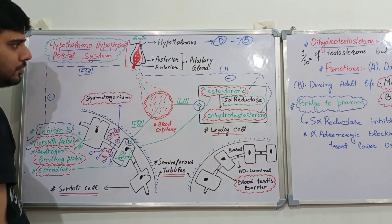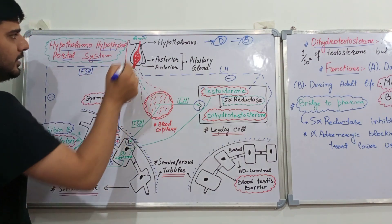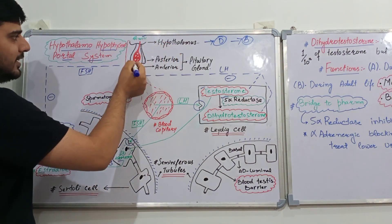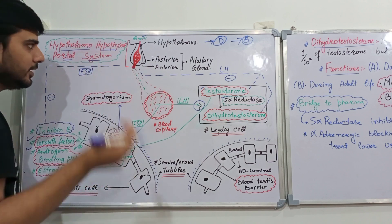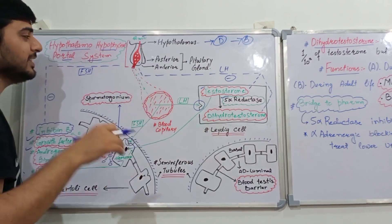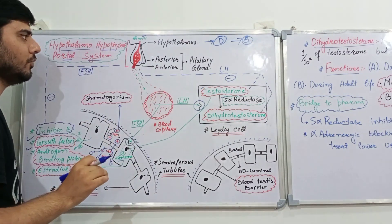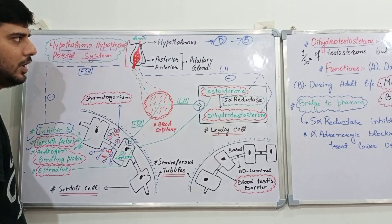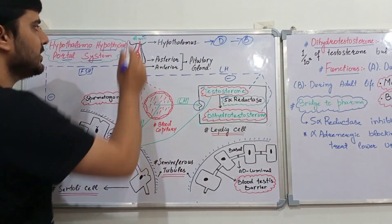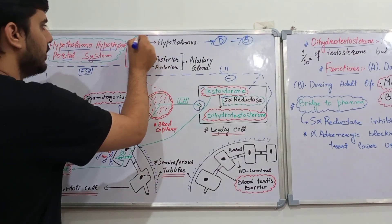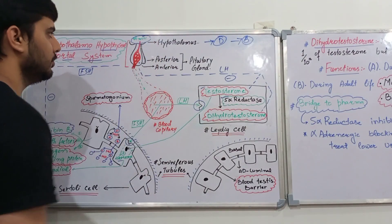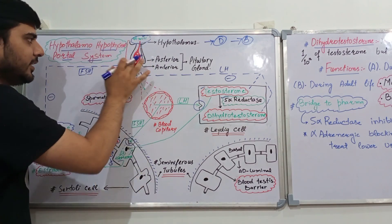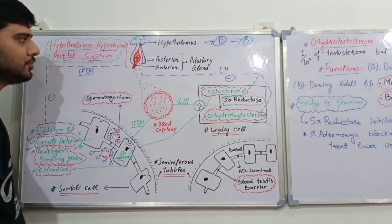These hypothalamic hormones reach the anterior pituitary and there they cause either the release or the inhibition of various hormones. One such hypothalamic hormone is the gonadotropin-releasing hormone. This GnRH, after it reaches the anterior pituitary, causes the release of two important hormones.